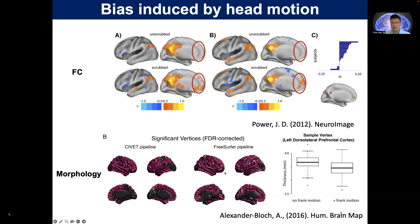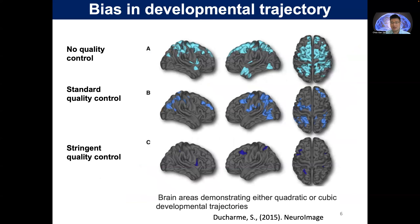You can also find in the Human Connectome paper that morphology artifacts are found as well. And in this NeuroImage paper — if there's no quality control, there are lots of quadratic or cubic development effects. If you do standard quality control, there are fewer. If you do structural quality control, the effects are much less. In development studies, kids move their heads much more, so you need to carefully control your data.